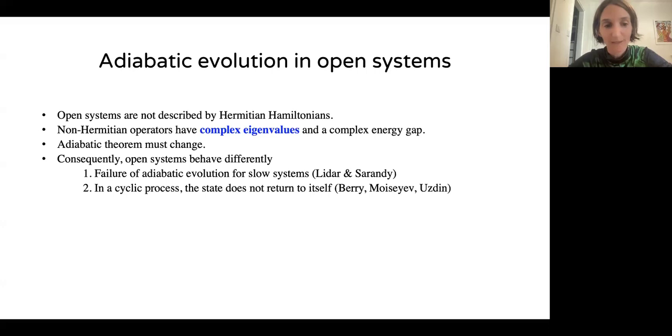There are cases where adiabatic evolution can fail, even though the system varies slowly compared to the energy gap. And another striking difference relates to cyclic adiabatic processes. These are processes where you take your system and you change it adiabatically from some initial state, you change its parameters, but in the end, you bring back the parameters to the same initial state. Normally, in Hermitian quantum mechanics, the wave function can pick up a phase, but it will return to itself in the end of the loop. But if the system is open, the state may change altogether.